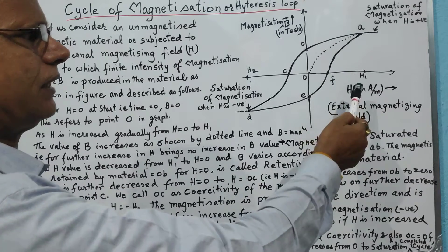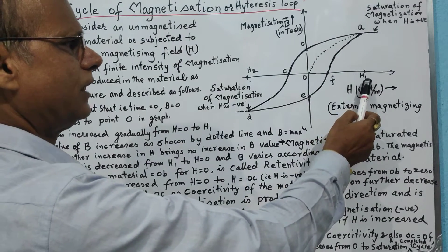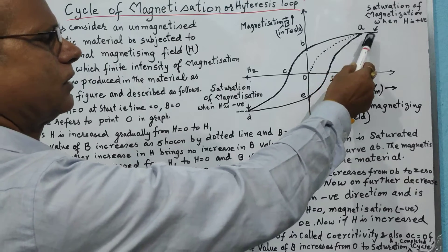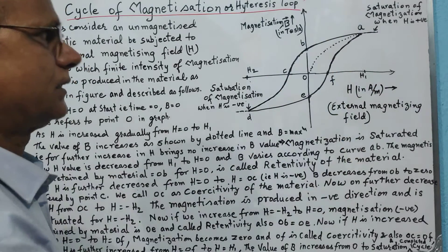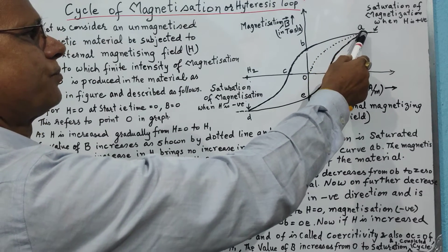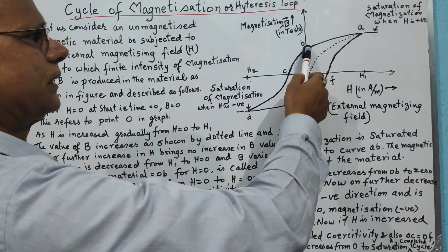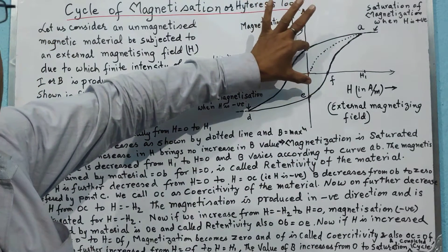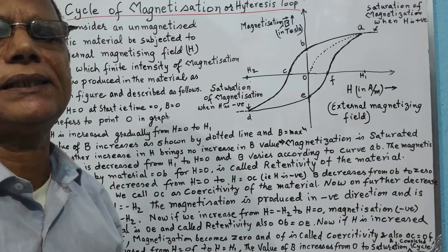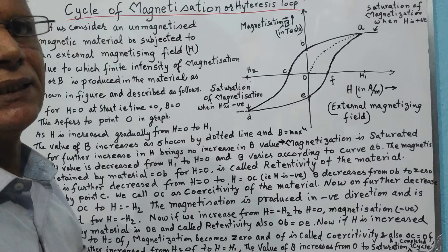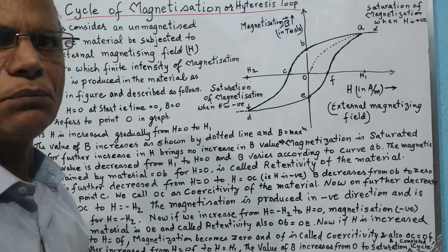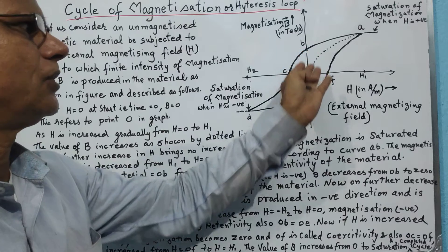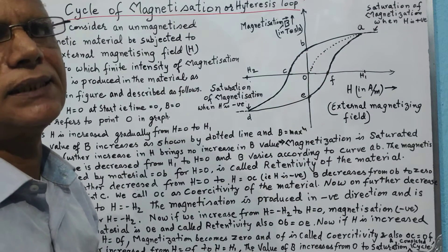Now when we start decreasing the value of the external magnetizing field from the maximum value H1 gradually to 0, the intensity of magnetization decreases from the maximum value to a certain value OB. This means when the external magnetizing field is removed, some magnetization is still retained by the material. Therefore OB represents the retentivity of the material — the magnetization retained even when the external field is zero.